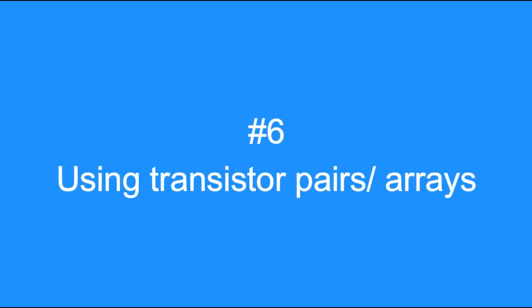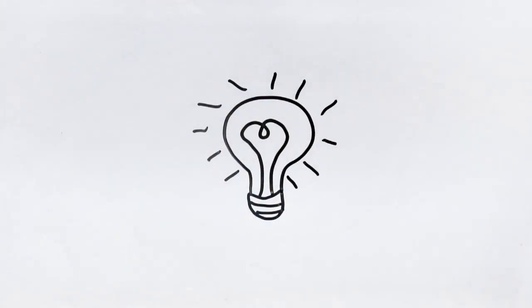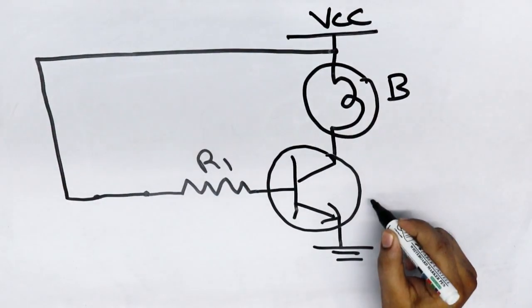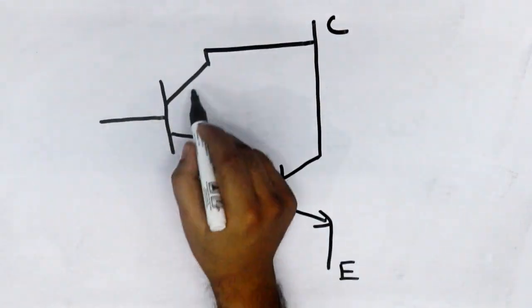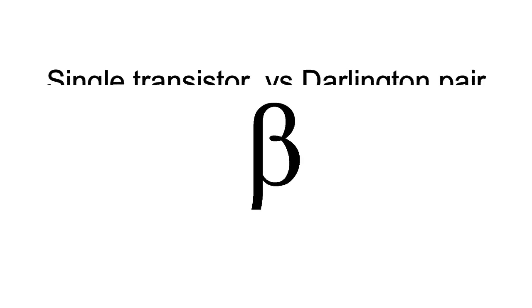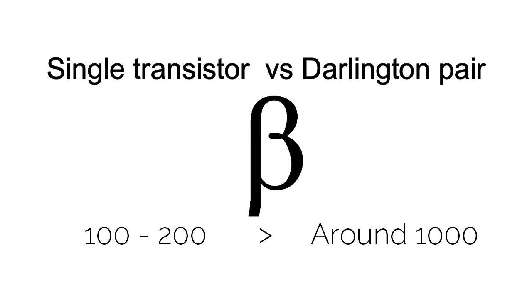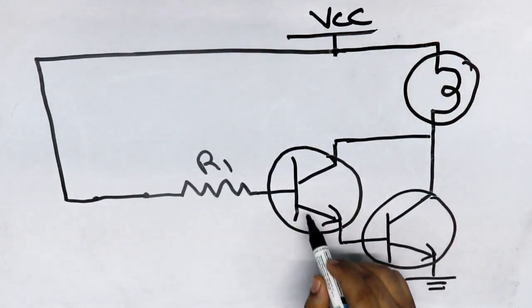Tip number 6: Using Transistor Arrays. Transistors are widely used to turn on or off a load and amplify signals. When using a transistor as a switch, there might be instances where it cannot provide enough current to turn on the load. In such cases, you could use a Darlington transistor, as shown here. Darlington pairs have a high current gain in the range of 1000, which is much greater than the gain of a single transistor (around 100 to 200), making them more sensitive to input base current and able to operate loads quite easily.